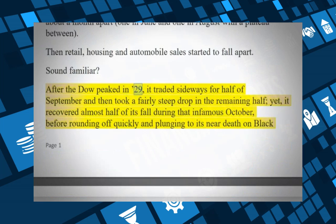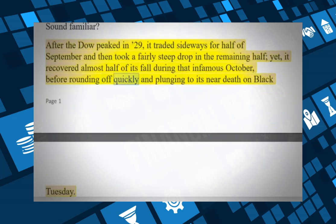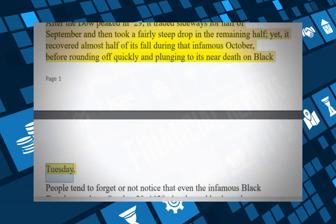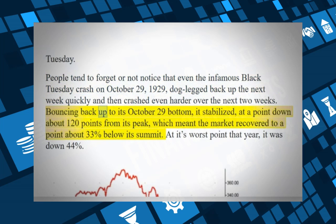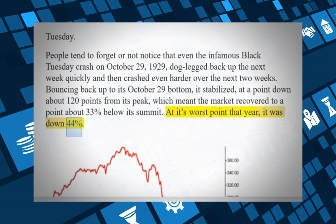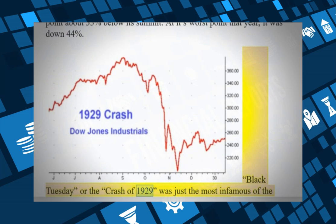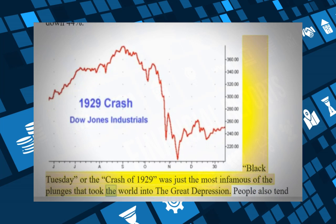After the Dow peaked in 1929, it traded sideways for half of September and then took a fairly steep drop in the remaining half. Yet it recovered almost half of its fall during that infamous October, before rounding off quickly and plunging to its near-death on Black Tuesday. People tend to forget that even after Black Tuesday on October 29, 1929, the market dog-legged back up the next week and then crashed even harder. At its worst point that year, it was down 44%.